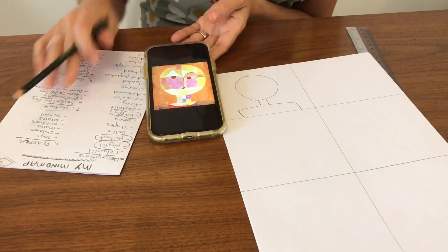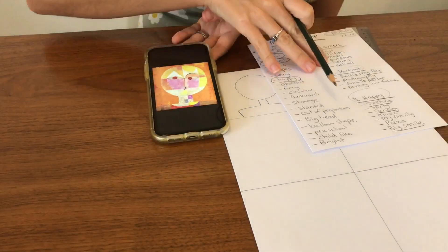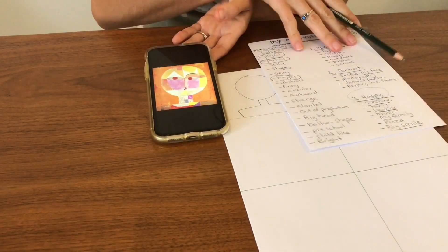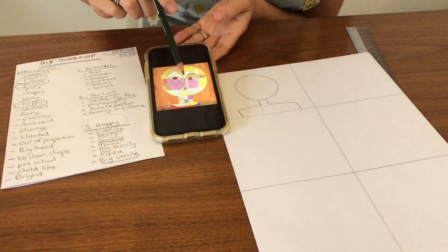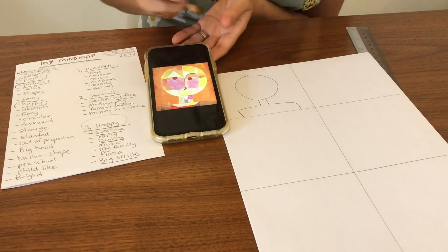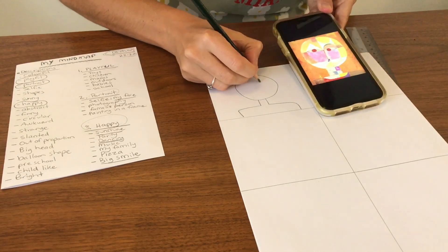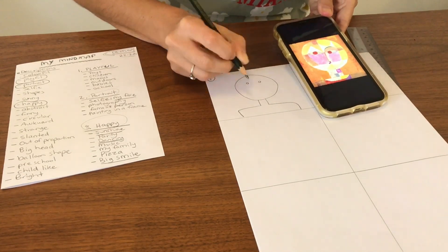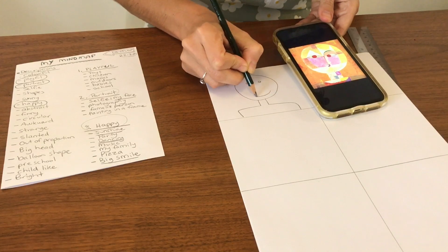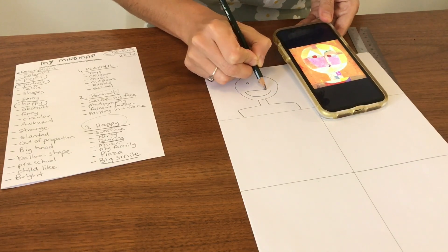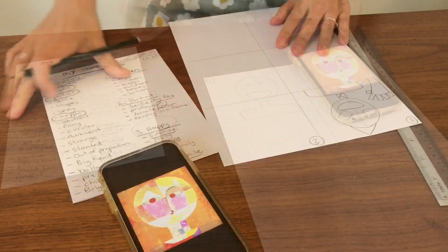But I did write down on my mind map, I wrote here about a big smile. Now he doesn't have any mouths. He has eyes. Maybe I could do like tiny eyes. But maybe I work at this like big kind of smile shape.